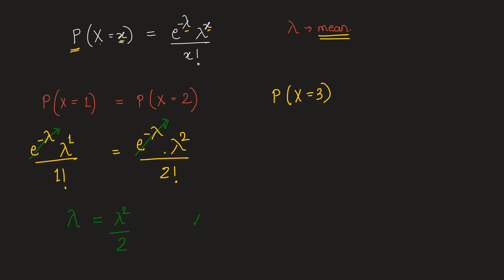So rearranging this we have lambda square minus 2 lambda. We take 2 to the left hand side and then take it to the right hand side, writing it again like this: lambda square minus 2 lambda equal to 0.